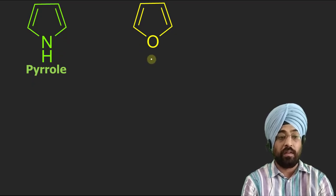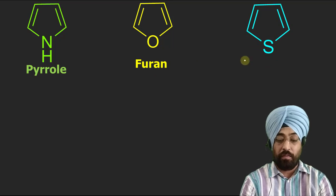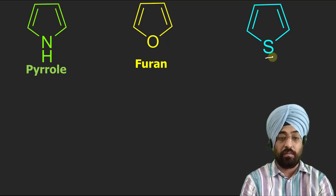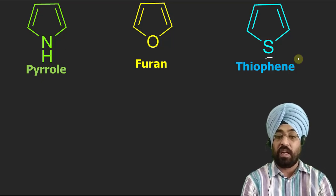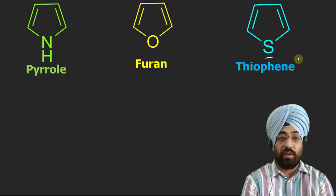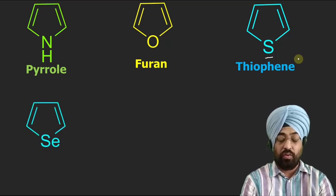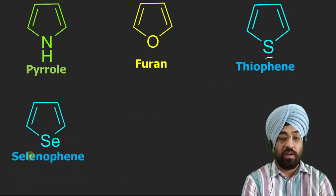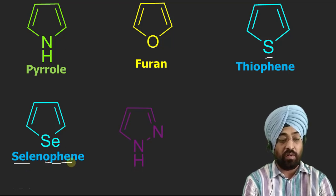Similarly, if instead of nitrogen we have oxygen, this compound has the name furan — you are already familiar with this compound. Similarly, when we have sulfur instead of oxygen, its name is thiophene. These compounds most of you have done in your graduation classes, so you are quite familiar with them. Similarly, if instead of sulfur or oxygen we have selenium, then it is called selenophene. So this is its trivial name.